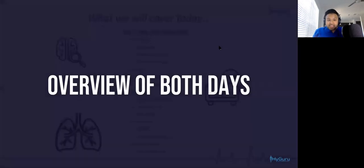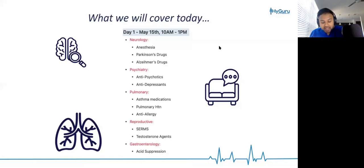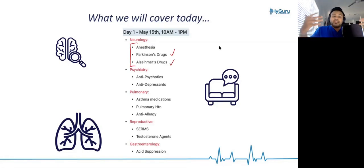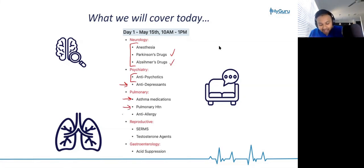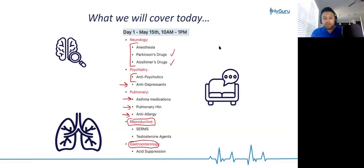Now let's go into what we will cover today. We're starting with neurology, covering anesthesia, Parkinson's drugs, and Alzheimer's drugs. Parkinson's drugs are all related to dopamine; Alzheimer's drugs are all related to acetylcholine. Antipsychotics are antidopaminergic. Antidepressants — when in doubt, put SSRIs. We'll talk about asthma medications — all about bronchodilation and reducing inflammation. Pulmonary hypertension — we need to decrease pulmonary vascular resistance. Anti-allergy — we'll be blocking the H1 receptor, very high yield. Then we transition into reproductive: estrogen and testosterone agents. Finally, we'll end with gastroenterology and talk about acid suppression.